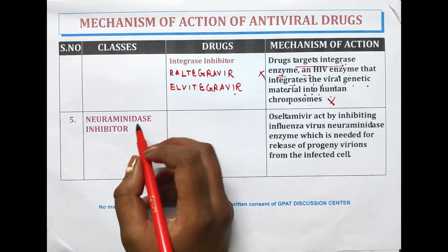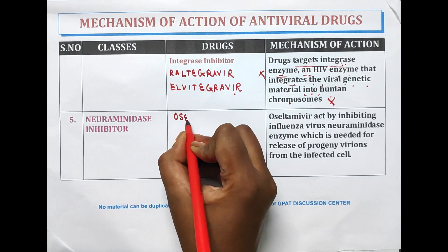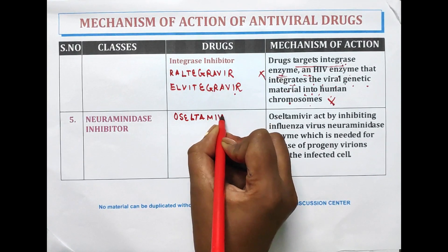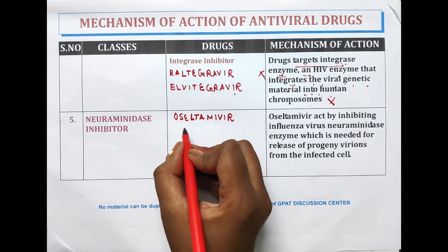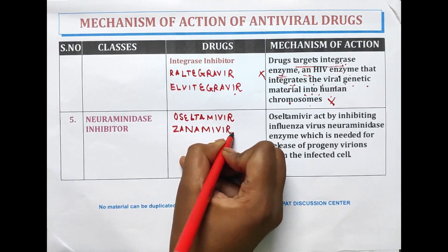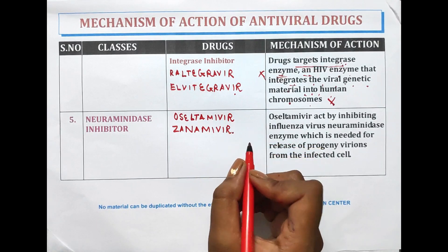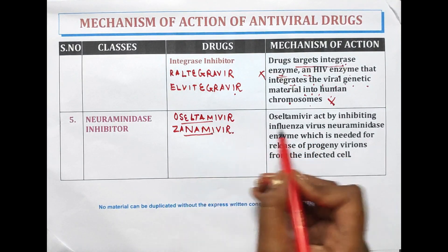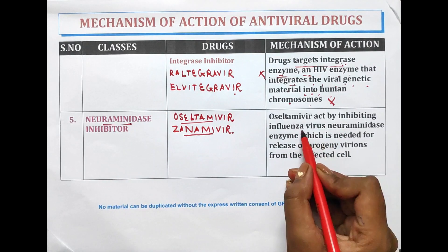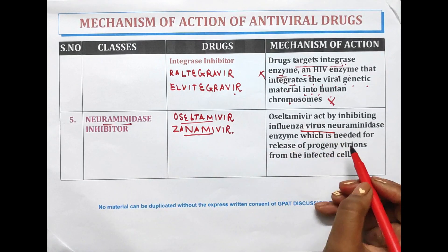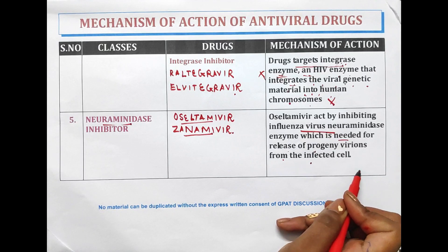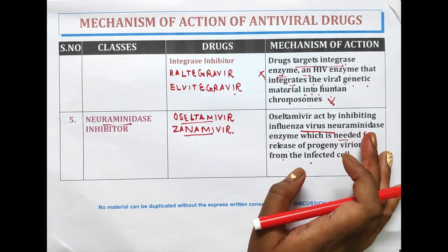Neuraminidase inhibitors include oseltamivir and zanamivir. These drugs act by inhibiting the enzyme neuraminidase, which is needed for the release of progeny virions from the infected cell. That's all for the antiviral drugs.